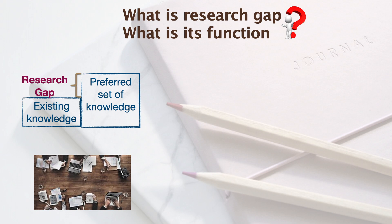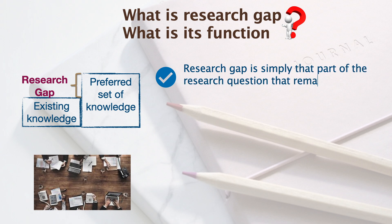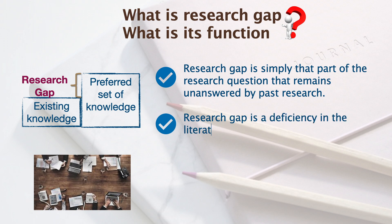Existing knowledge comprises findings from studies conducted by other researchers in the past in a particular domain or topic. Research gap is simply that part of the research question that remains unanswered by past research due to some limitations. In other words, a research gap can also be referred to as a deficiency in the literature. Therefore, a research gap in its simplest form is that part of the research question that has not been answered properly in earlier studies.